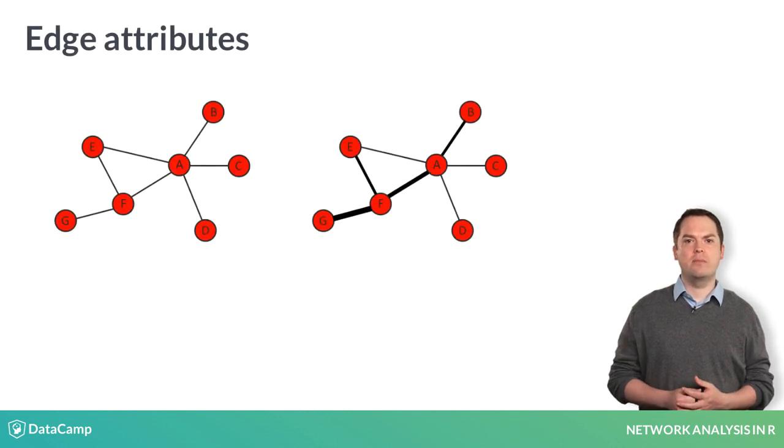Edges may also have attributes. This may refer to the type of relationship that individual vertices have. For instance, it could be whether an interconnection is romantic or platonic in a friendship network, or whether a flight route between cities is scheduled daily or weekly.